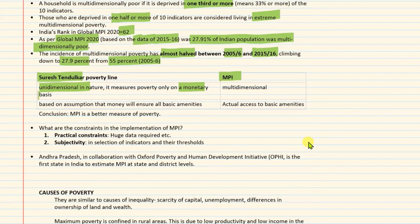So what is the difference between the Suresh Tandulkar poverty line and the Multidimensional Poverty Index? The Suresh Tandulkar poverty line is unidimensional in nature, as it measures poverty only on a monetary basis. For example, in 2011–12, the poverty line was Rs. 32 — those below 32 rupees are poor, those above are not. Only one dimension is used: the monetary dimension. MPI is more multi-dimensional, using different dimensions.